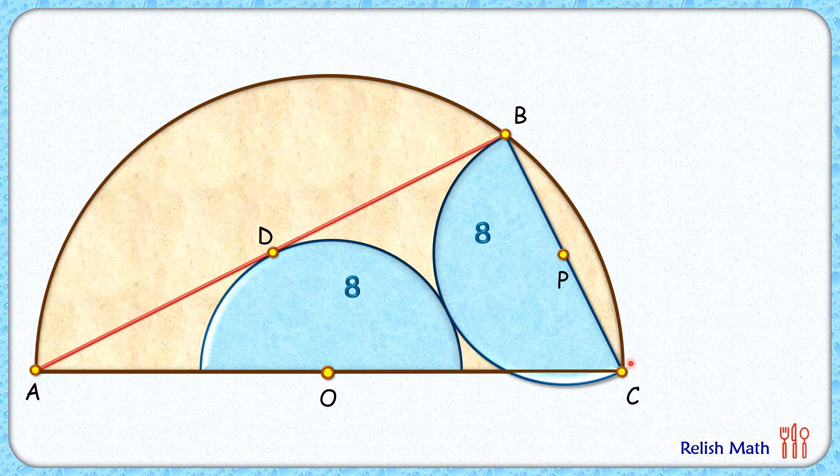Let's join D-O, that's the radius of the blue semicircle, thus this is small r. These semicircles are congruent, and thus BP is also small r and PC is also small r.